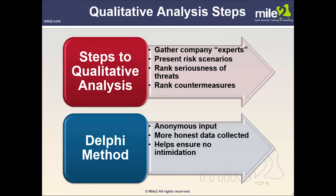Steps to qualitative analysis: gather company experts, present risk scenarios, rank seriousness of threats, and rank countermeasures — generally using a numerical scale like one to five or one to six. There is also what's called the Delphi method, which allows anonymous input, generally resulting in more honest data collected and helping ensure there's no intimidation.